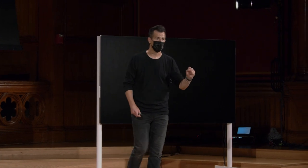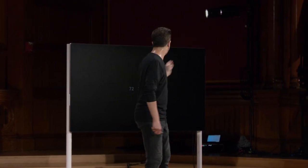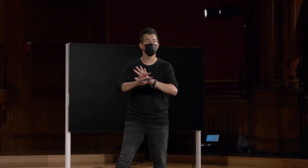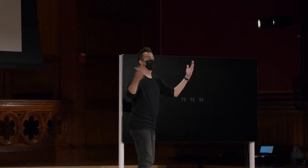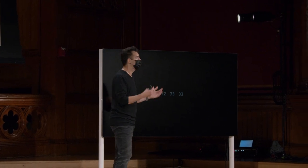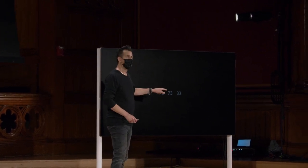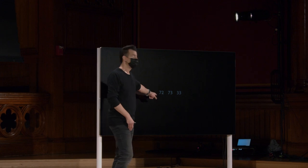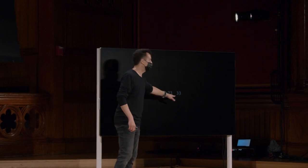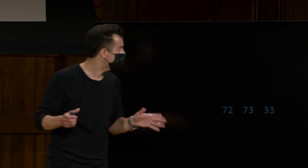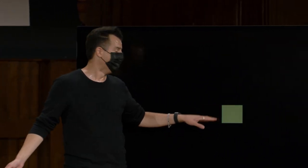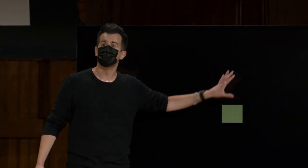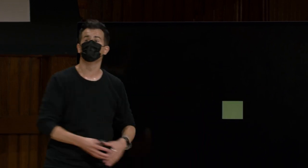Por exemplo, suponha que um computador que estamos usando tenha esses três números — 72, 73, 33 — não mais no contexto de um e-mail ou uma mensagem de texto, mas agora no contexto de algo como o Photoshop, um programa para editar e criar arquivos gráficos. Talvez este primeiro número possa ser interpretado como representando alguma quantidade de vermelho, verde e azul, respectivamente. Você pode pensar no primeiro dígito como vermelho, o segundo como verde, o terceiro como azul. Quando você combina essa quantidade de vermelho, essa quantidade de verde e essa quantidade de azul, isso vai se assemelhar ao tom de amarelo.